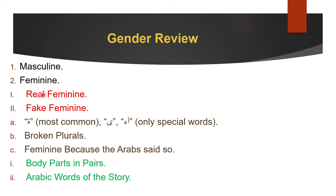Feminine is divided into two types: real feminine, which is the biological common-sense feminine like mother or aunt, and fake feminine — things that don't really have any gender, mostly objects or animals. The fake feminine clues are: first, tā' marbūṭa, which is the most common; alif maqṣūra, which appears in only special words; and alif mamdūda, which is also only some special words.